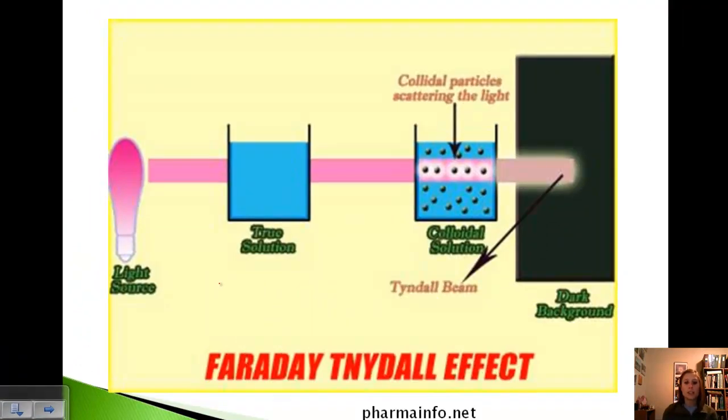So here's just another representation. You've got your light source over here. And then with a true solution, you're not seeing any light from the side. Here the particles are scattering the light, so you're actually seeing it from the side, and then it's reflecting onto a dark background. This beam is called a Tyndall Beam.